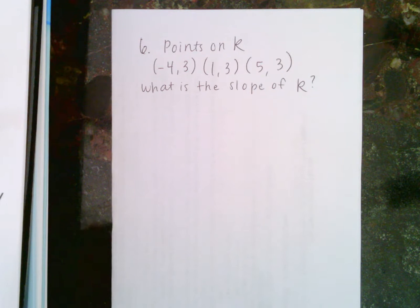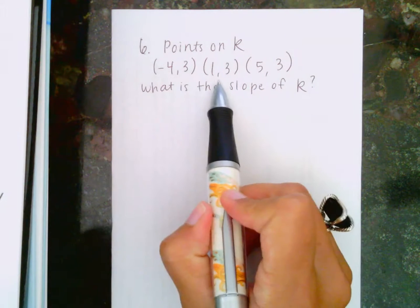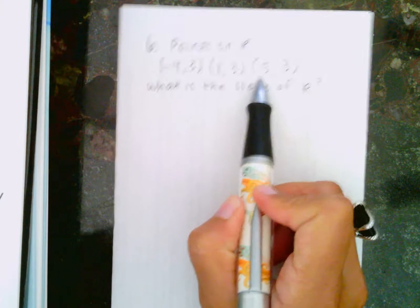Okay, so this is a question I received from someone. These points lie on line R: negative 4, 3, 1, 3, 5, 3, and the question is,